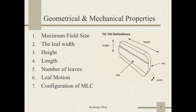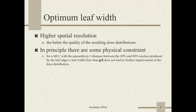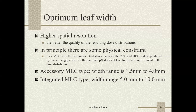The maximum field size, leaf width, height, length, number of leaves, leaf motion, and configuration of MLCs are included in geometrical and mechanical properties as per TG50 definition. The optimum leaf width provides higher spatial resolution and better quality of resulting dose distribution. For MLC penumbra P, defined as the distance between the 20% and 80% isodose produced by the leaf edge, a leaf width finer than P divided by 2 does not lead to further improvement in dose distribution. Accessory MLC type width range is 1.5 mm to 4 mm; integrated MLC types width range is about 5 mm to 10 mm. A width of 5 mm is a good compromise.